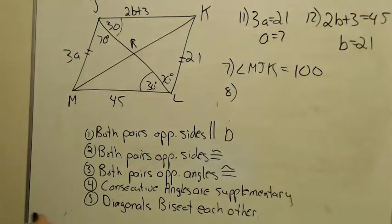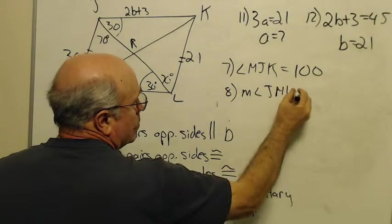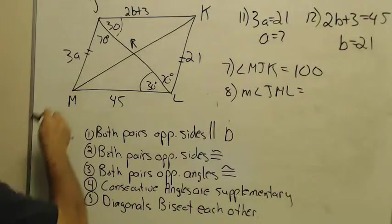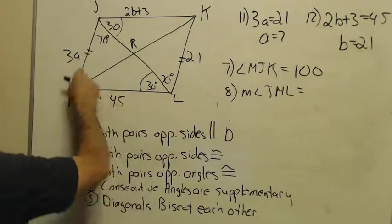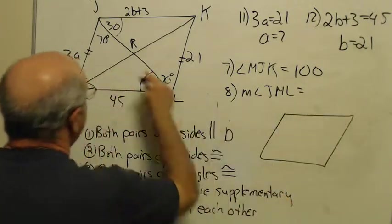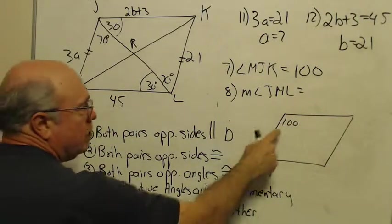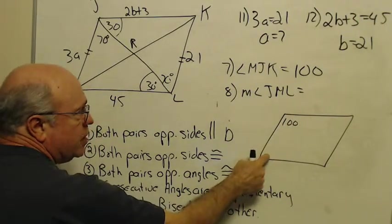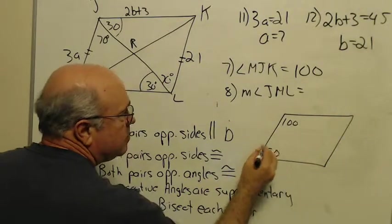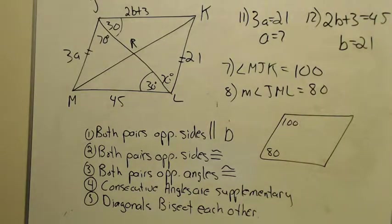Number eight asked for JML. Okay. Angle JML, that's this whole angle down in the corner. Now, here's where I like having a second picture. Remember, we just established this angle being 100. Well, remember that the angle they just asked for, that JML down here, that whole angle, that's its supplement. So it's got to be 80 to add up to 180.